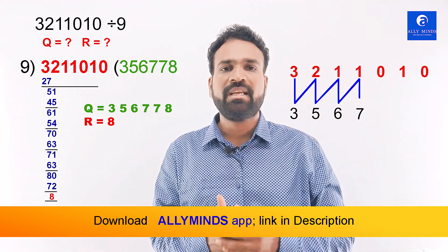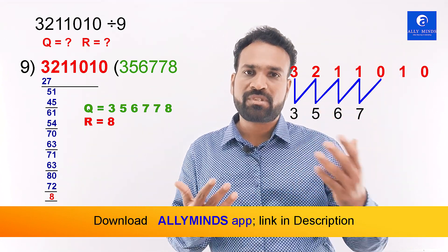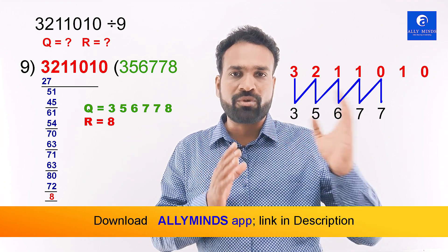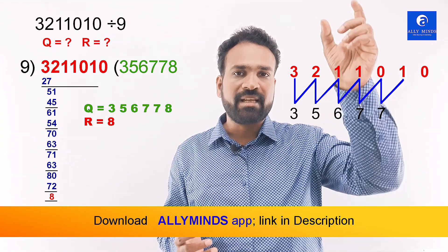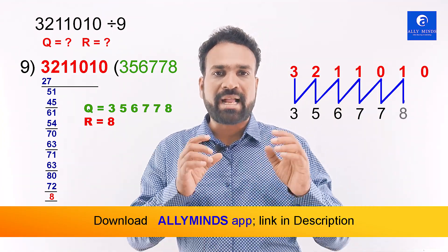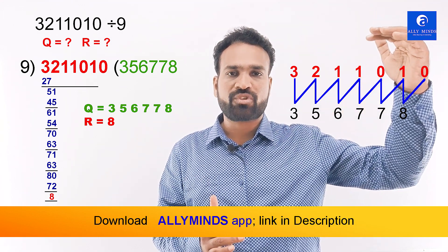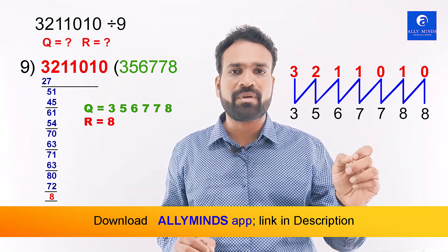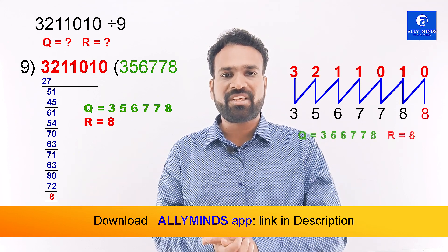We divide the number by 9. Starting with 7, the next numbers are 0, 1, 0. 7 plus 0 is 7 — drop it down. Next number 1: drop 1. What is 7 plus 1? 8. Drop 1. Next number is 0 to add: 8 plus 0 is 8. In these digits, the last number represents the remainder. So our remainder is 8 and the remaining digits form the quotient.